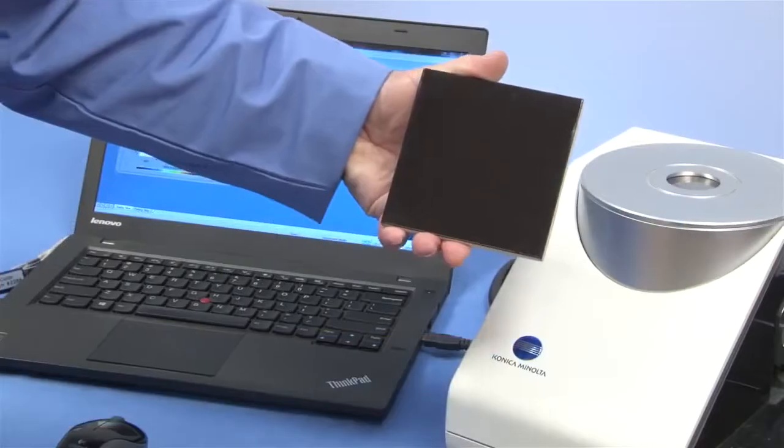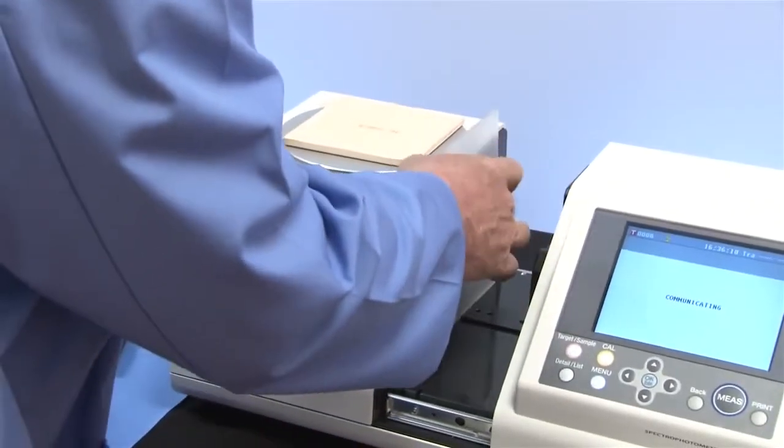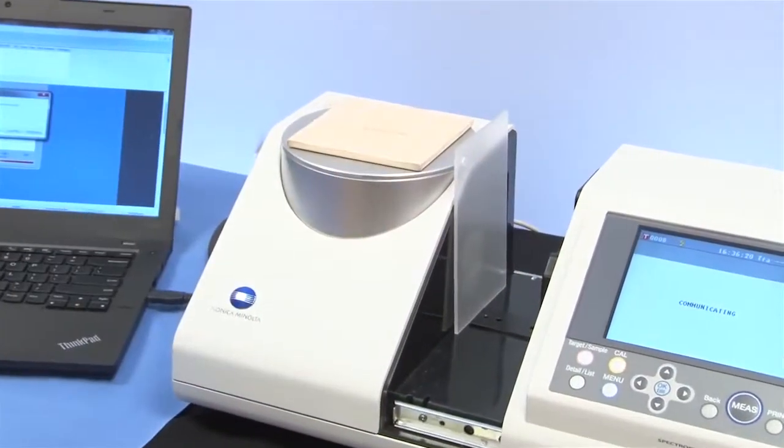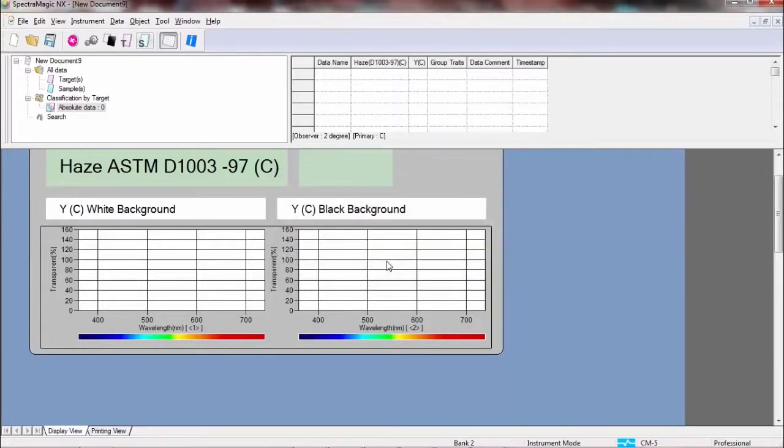The reflectance port must be blocked. SpectraMagic NX allows for measurements of haze with the use of a custom template, an important quality control procedure for many industries.